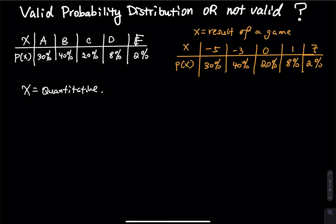Is this a valid probability distribution? First, they sum up to 100%. Second, each probability is between 0% and 100%. However, is x quantitative? The answer is no — grades are not quantitative. So this is not a valid probability distribution.